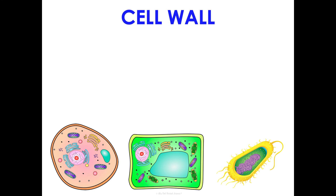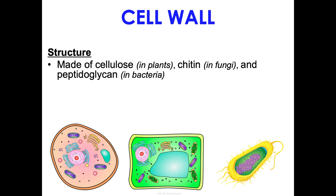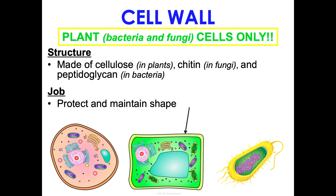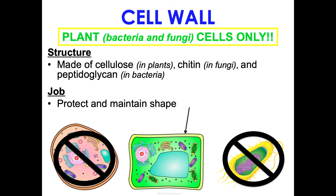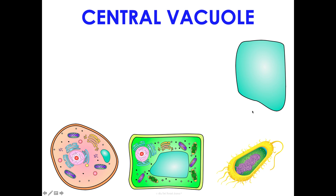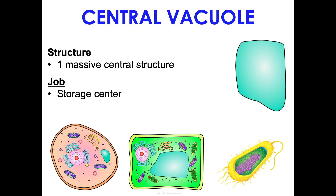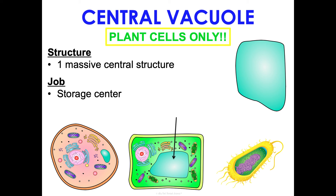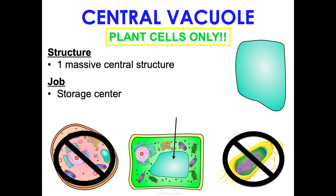The cell wall is found in plant cells, fungi, and bacteria — not animal cells. In plants it's made of cellulose, in fungi it's made of chitin, and in bacteria it's made of peptidoglycan. It protects the cell and maintains its shape as the outermost structure. The central vacuole is one massive central storage structure found in plant cells only.